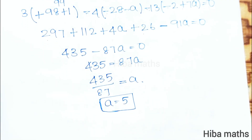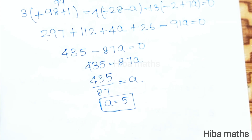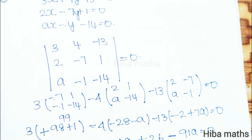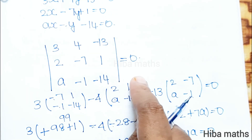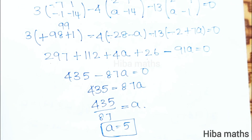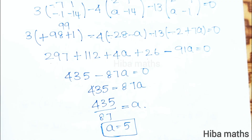So when the three lines are concurrent, the determinant value is equal to 0. We expand and solve to get the value of a equals 5. Thank you so much for watching.